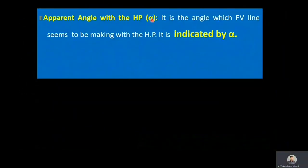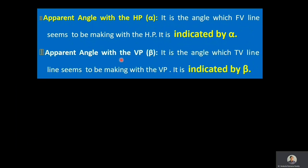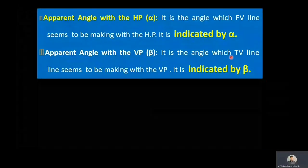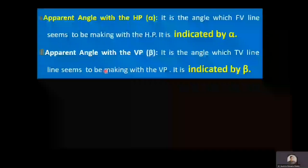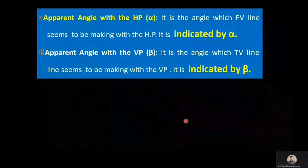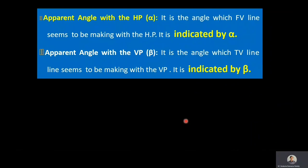Apparent angle with HP is denoted by alpha — it is the angle which the front view line seems to be making with the HP. Apparent angle with VP is denoted by beta — it is the angle which the top view line seems to be making with the VP. So, front view line making an angle with HP is denoted by alpha.